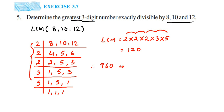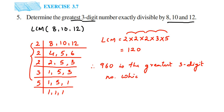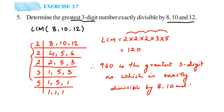Therefore, 960 is the greatest 3-digit number which is exactly divisible by 8, 10, and 12. That's it. I hope this question is clear. In case you have any other question or doubt, you can drop a comment. Thank you so much for watching.